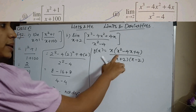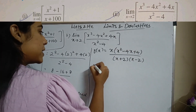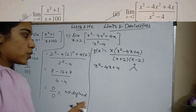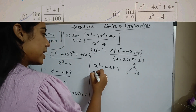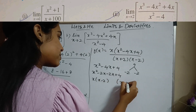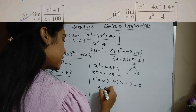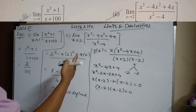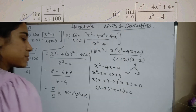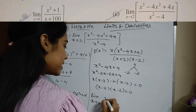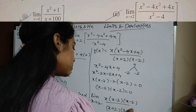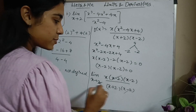Now splitting x² - 4x + 4: I want the product to be 4 and the sum to be -4, so I use -2 and -2. This gives x² - 2x - 2x + 4 = x(x-2) - 2(x-2) = (x-2)(x-2). So f(x) = x(x-2)(x-2) divided by (x+2)(x-2). Taking the limit as x tends to 2, I can cancel (x-2) terms.